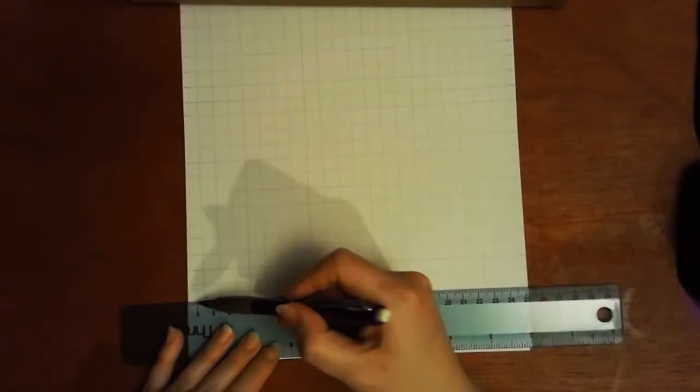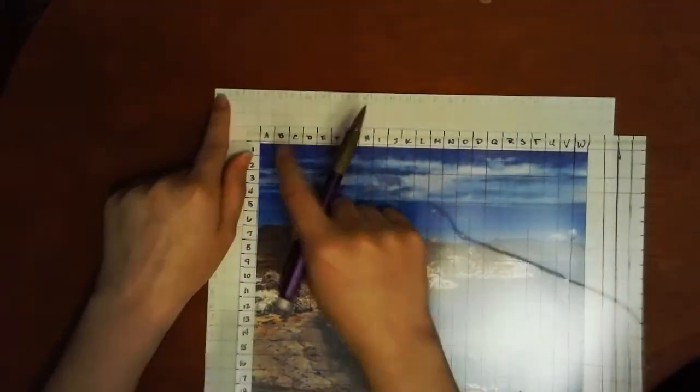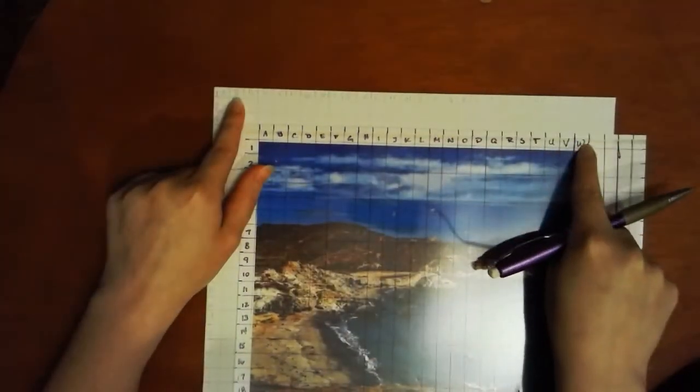Now that your paper is complete, we're going to start talking about how to transfer over your final image. You're going to take your picture, slide it underneath the plastic you just completed, and make sure that it lines up along your lines.